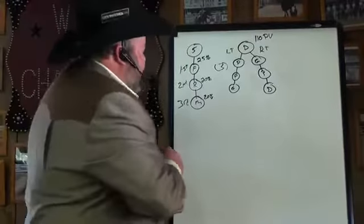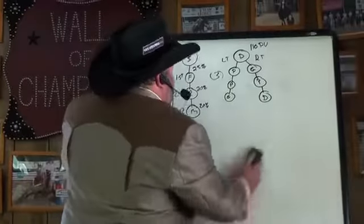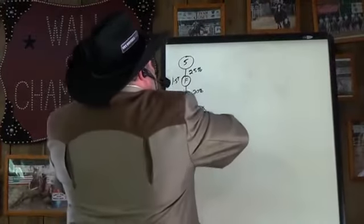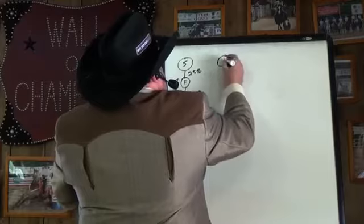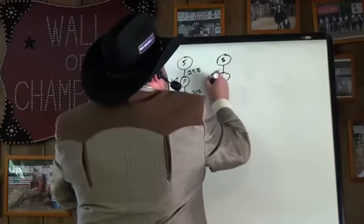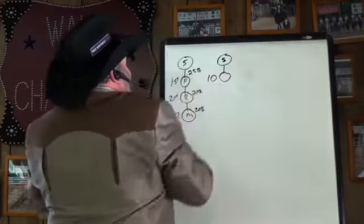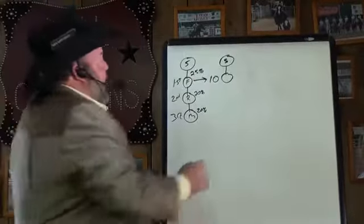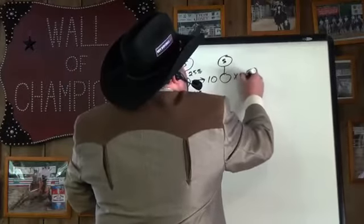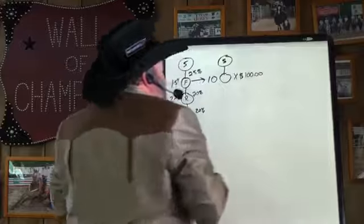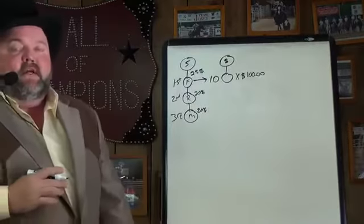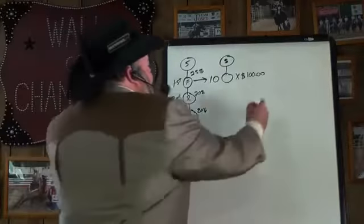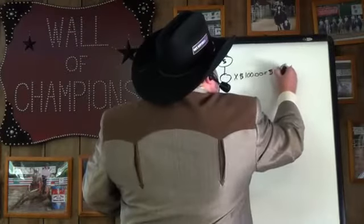Now, let me give you a good illustration to show you just how powerful this is. We're going to use Suzy again. Suzy sponsored 10 people on her first generation. There's 10 people here. All 10 of these people earn a measly $100 in the same week in Team Cycle commissions. 10 times 100 is $1,000, right?